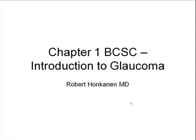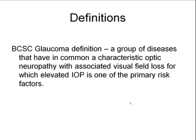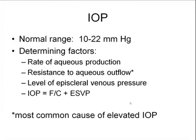Chapter 1 of the BCSC series in Glaucoma: Introduction to Glaucoma. The definition in the BCSC series for glaucoma is a group of diseases that have in common a characteristic optic neuropathy with associated visual field loss, for which elevated IOP is one of the primary risk factors.